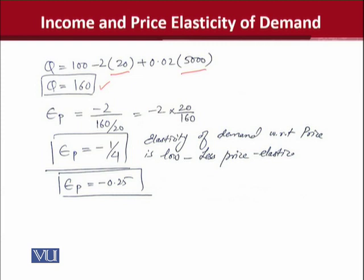But income can be represented in some cases with Y and in some cases you will see I just to show income. So, by putting these values in the price elasticity of demand, we have obtained this result, which is minus 1 over 4, or in other words, minus 0.25. And it shows that it is less elastic demand curve with respect to price.